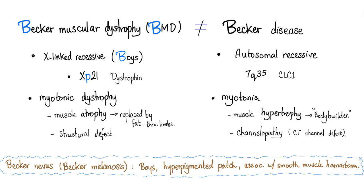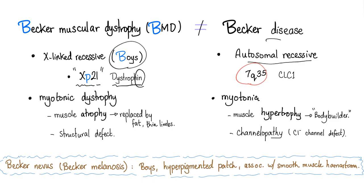Becker muscular dystrophy is X-linked recessive — therefore, it's commoner in males than females. Becker disease is autosomal recessive. The problem in Becker muscular dystrophy is a deletion in the XP21 gene, which is the dystrophin gene and dystrophin protein — if it ends in -in, it's a protein. Becker disease involves a 7Q35 mutation, and the problem is in the CLC1 protein.